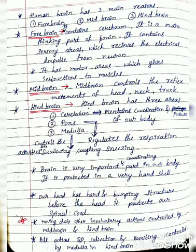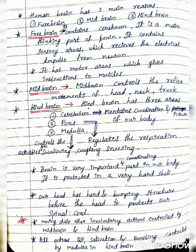Now let us know about the structure of the human brain. It has three main parts: forebrain, midbrain, and hindbrain. The first one is the forebrain, which contains the cerebrum. The cerebrum is the main thinking part of the brain. It contains sensory areas which receive electrical impulses from neurons, and motor areas which give instructions to the muscles.